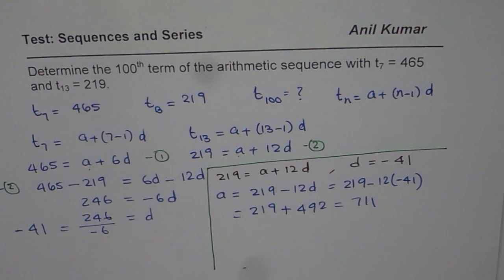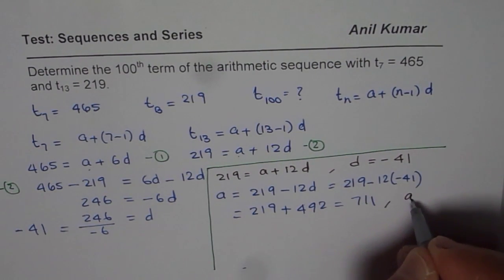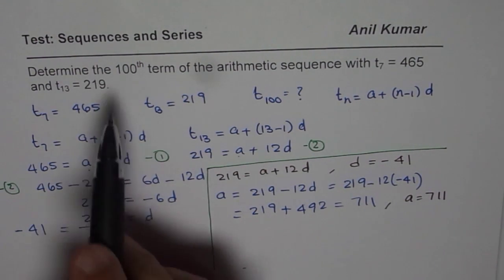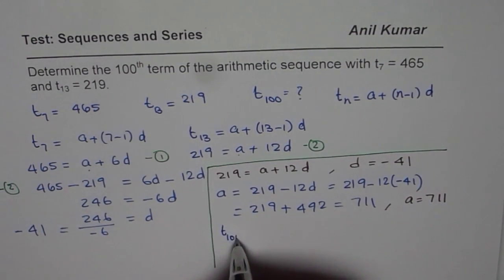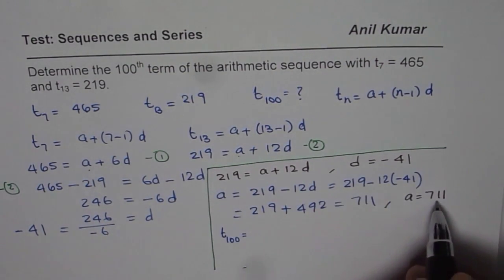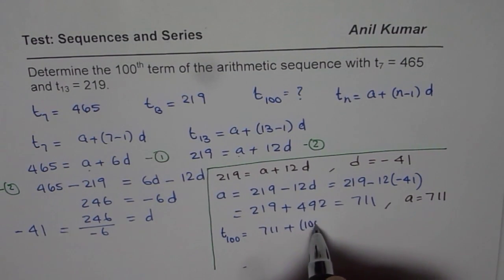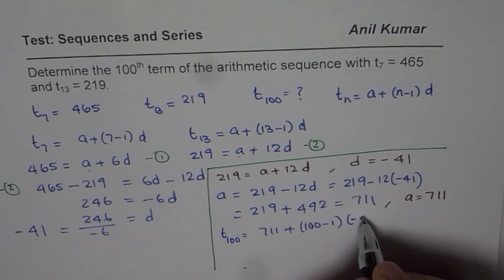So what we know now is that D is minus 41 and A is 711. So we can find the 100th term, T100, using the formula. T100 should equal A, which is 711, plus 100 minus 1 times D. D is minus 41, correct?